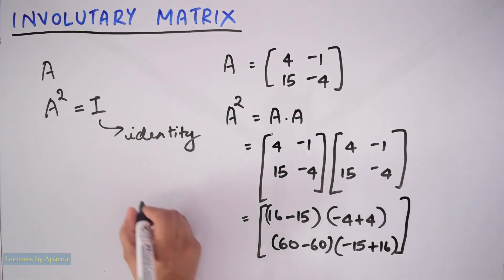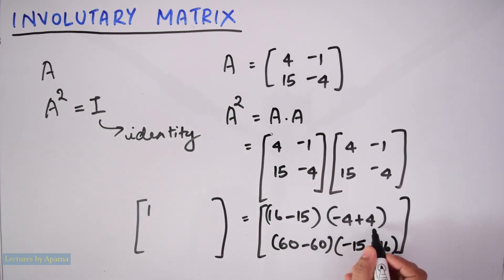So this will be equal to 16 minus 15 is 1, minus 4 plus 4 is 0, 60 minus 60 is 0, minus 15 plus 16 is 1.